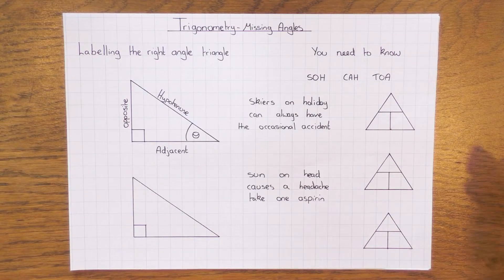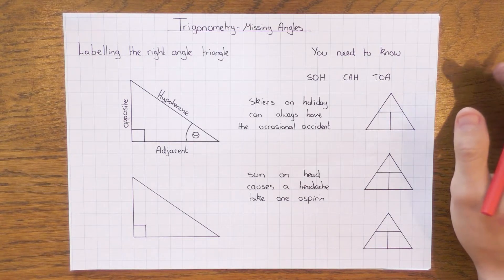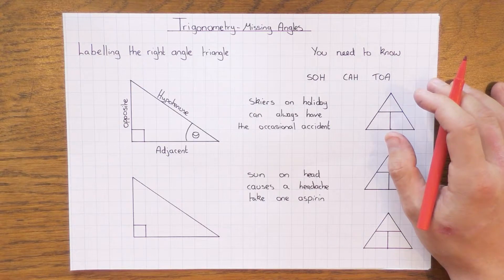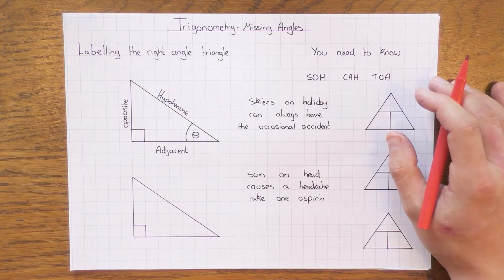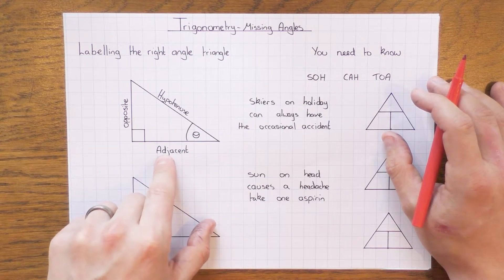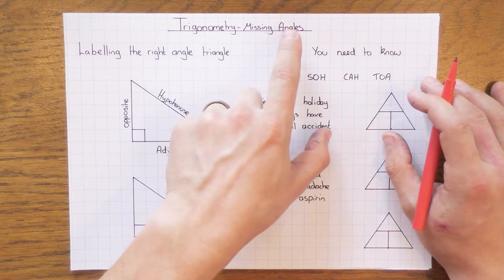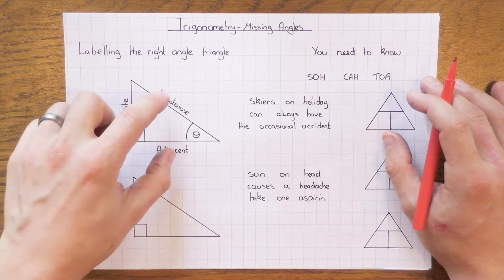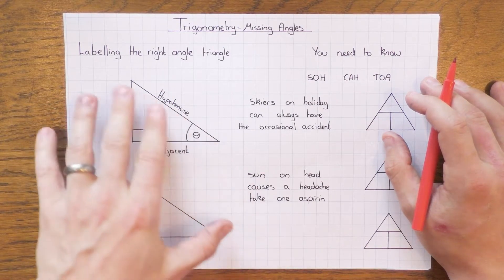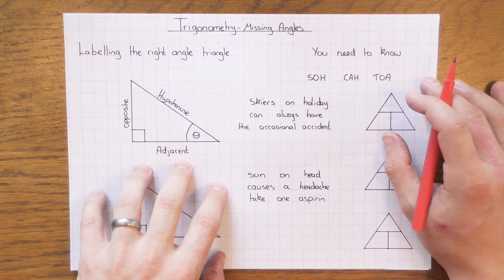With trigonometry, just like with Pythagoras, this is based on right-angled triangles, and we can always identify that with our little square here. With Pythagoras you need to know two lengths to find out the other length. With trigonometry, you need to have one length and an angle, and that will enable you to get the other length, but you can also work out missing angles. To do that, you need to know what two of the lengths are to work out the angle, but we need to be able to label our triangle first.